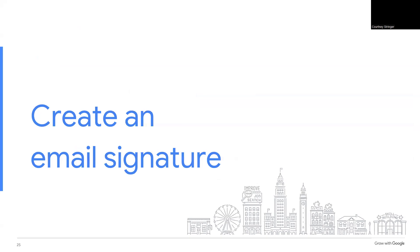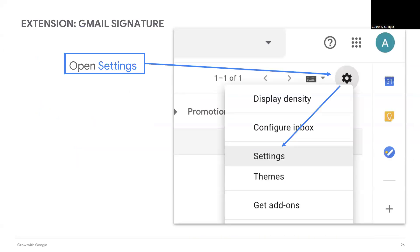The last step in today's workshop is how to create an email signature. An email signature adds a professional look to your emails. It can also add your contact information for the volunteer group or team members.